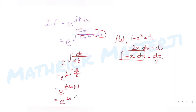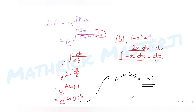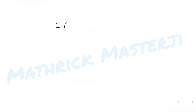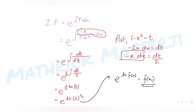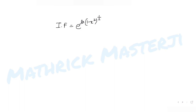This simplifies as e^((1/2) ln t) = e^(ln t^(1/2)) = t^(1/2), using the identity e^(ln f(x)) = f(x). Resubstituting t = 1 - x², I get (1 - x²)^(1/2) = √(1 - x²). So the integrating factor is √(1 - x²).